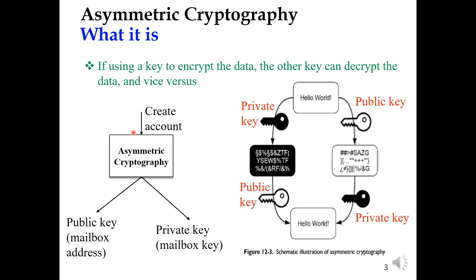So when you join a blockchain network and create an account, it means that you are running an asymmetric cryptography algorithm to generate two keys. One is known as the public key and the other key is known as the private key. The public key is equivalent to the mailbox address, and the private key is equivalent to the secret key to open the mailbox.